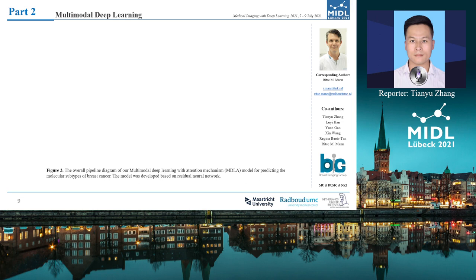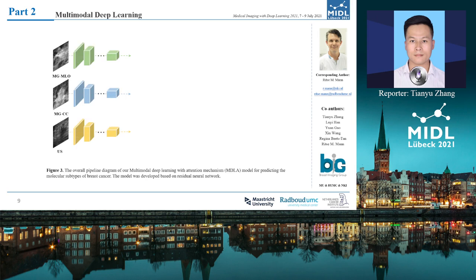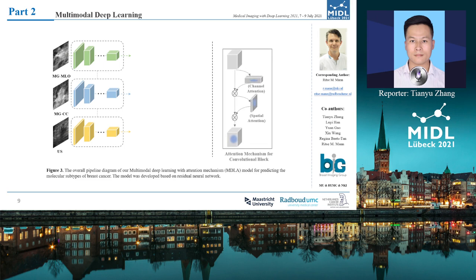Then, we designed a multimodal imaging model. First, we obtained the location of the region according to the labels marked by a dedicated breast radiologist. Two views of mammography and an ultrasound image of each case are used as inputs. Then, we combined ResNet and the attention mechanism as the feature extractor. Finally, all the features are combined to predict the molecular subtypes of breast cancer.